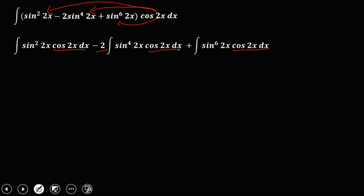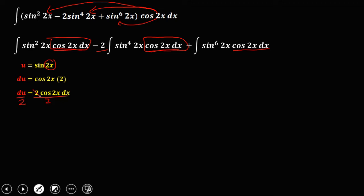Using the substitution method, let u equal sine 2x. The derivative of u: the derivative of sine 2x is cosine 2x times the derivative of 2x, which is 2. So du equals 2 cosine 2x dx. Since we have cosine 2x dx in our equation, divide both sides by 2, giving du over 2 equals cosine 2x dx.